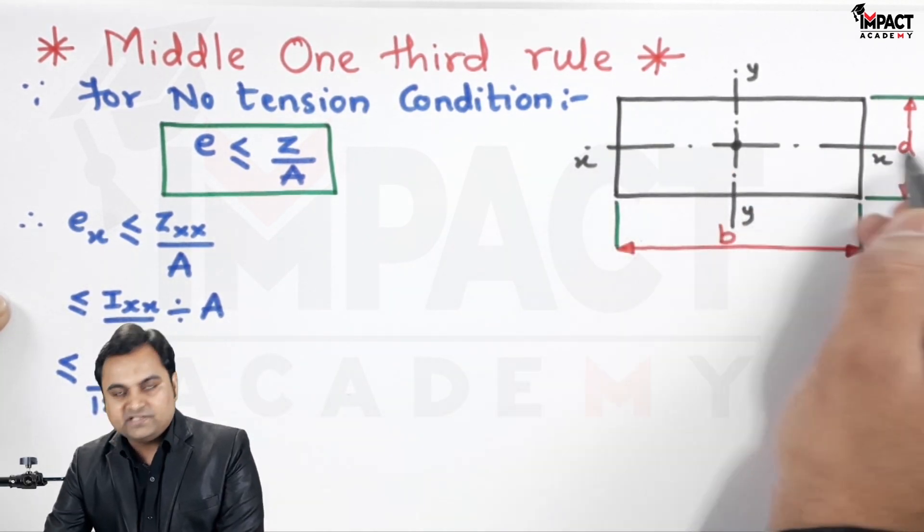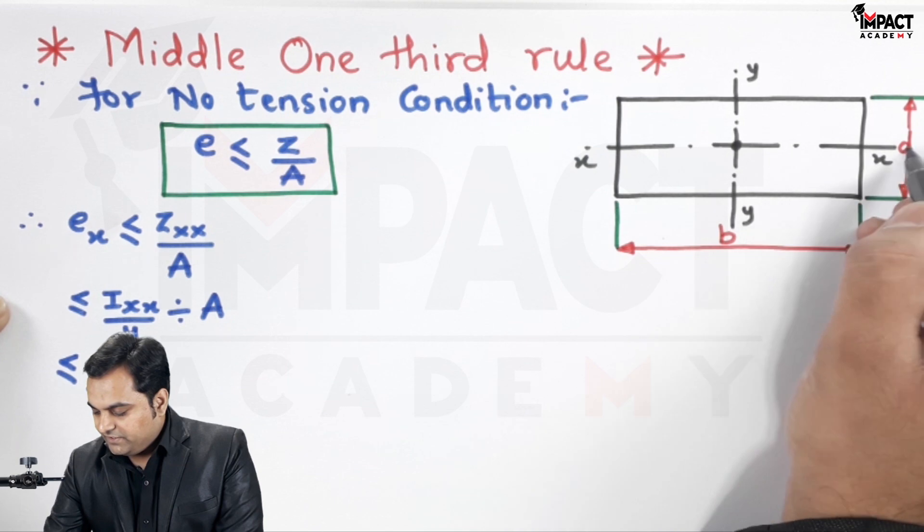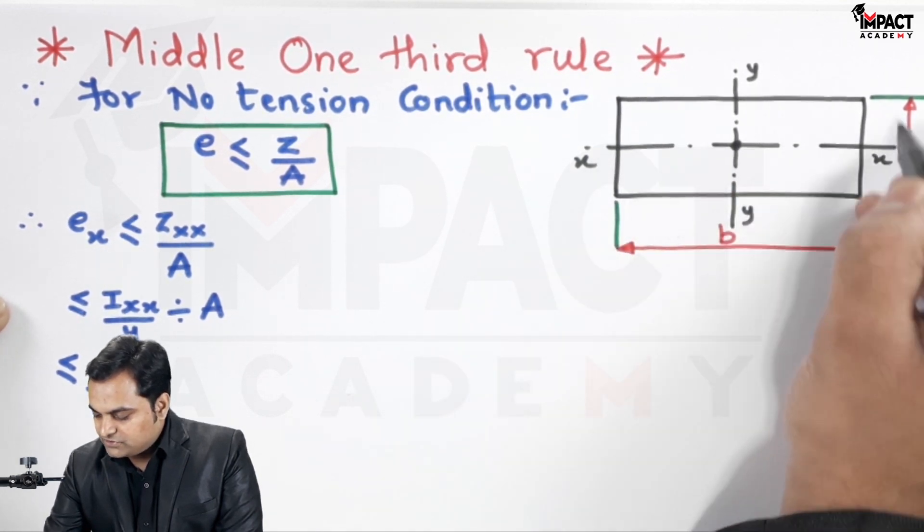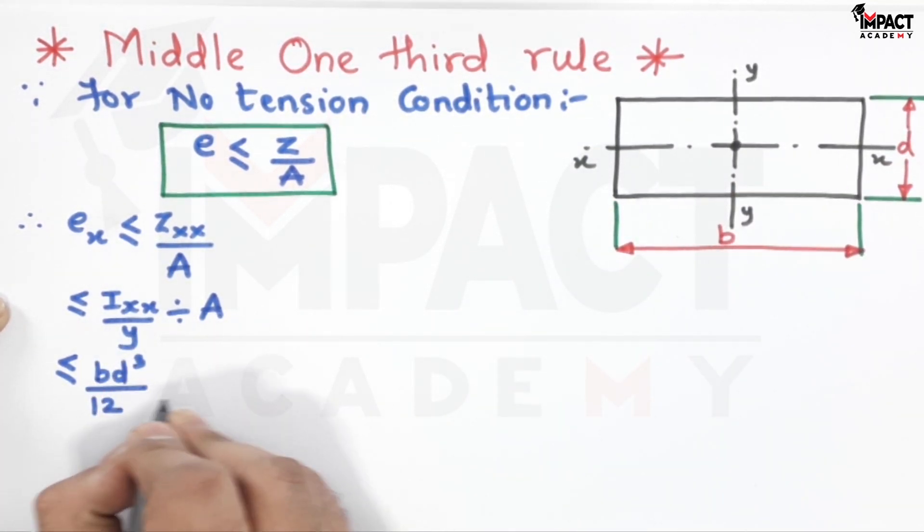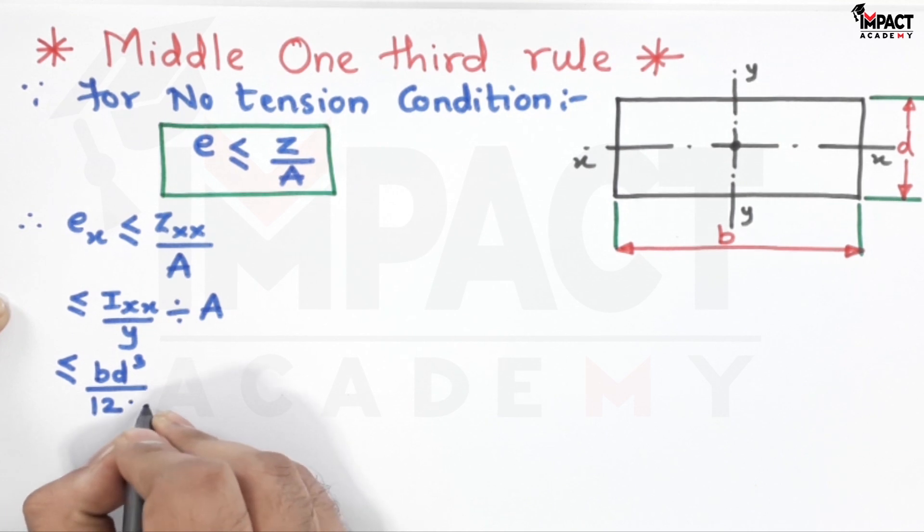Y is, we have to see this x-axis because we are taking the moment of inertia about this x-axis and it is cutting d. So y becomes d/2, so here in the denominator we have d/2.